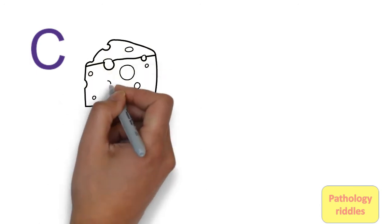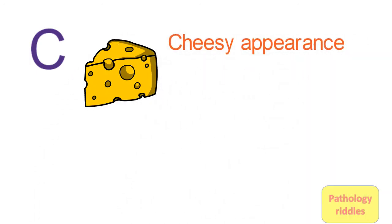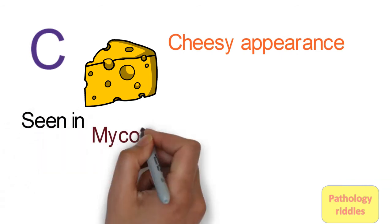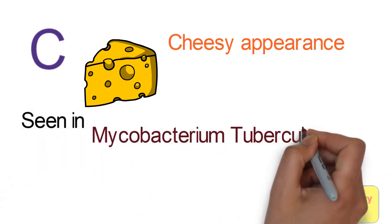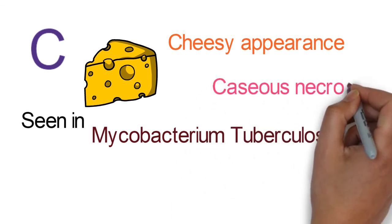Next we go to C. C is for cheesy appearance. What is cheesy appearance in pathology? It is seen in Mycobacterium tuberculosis when it undergoes caseous necrosis, usually in the center of a granuloma.